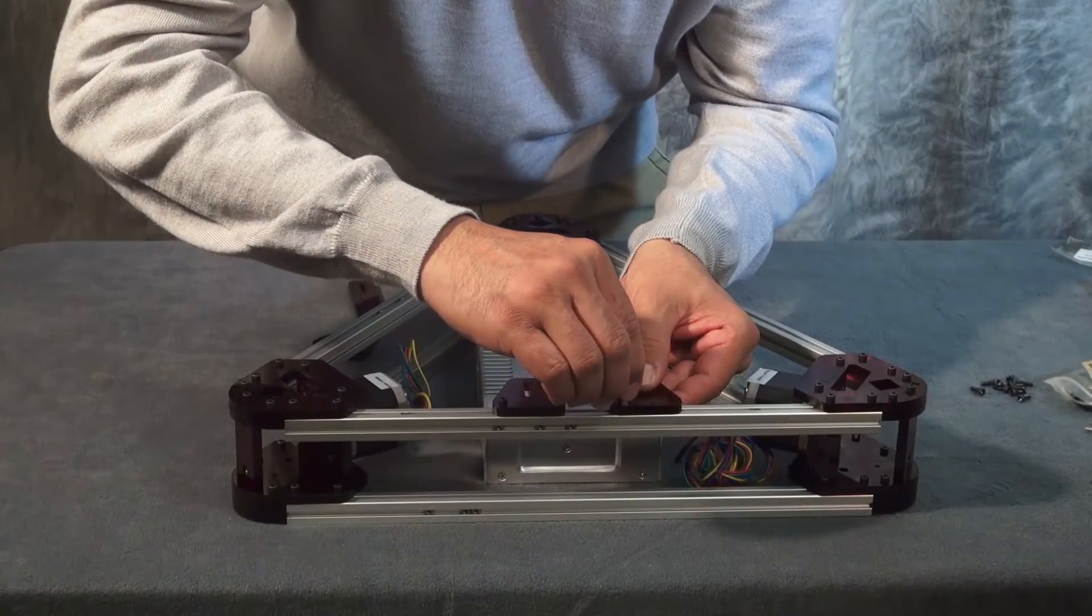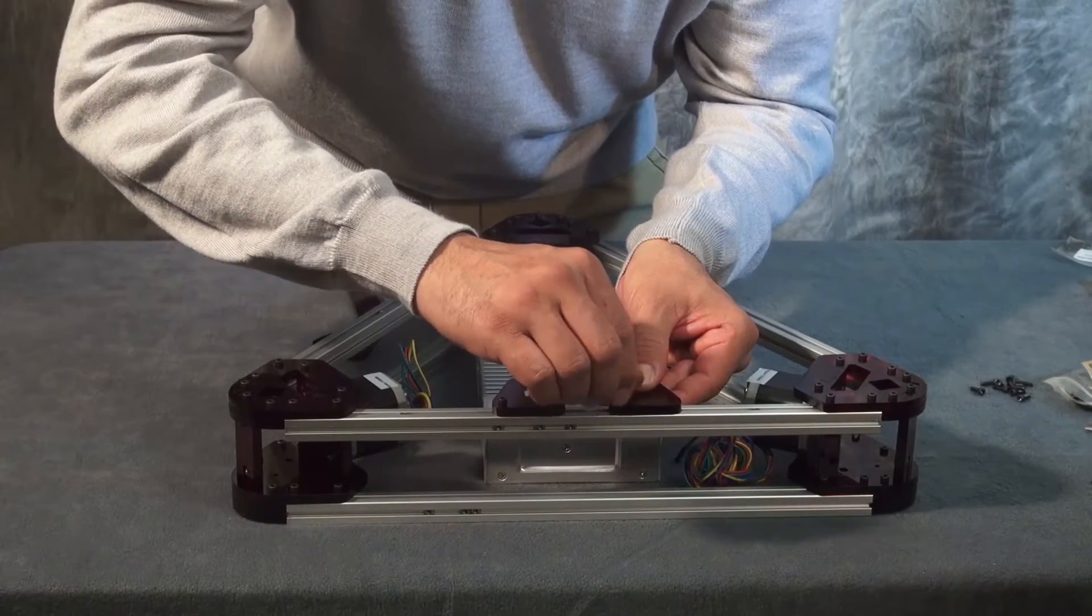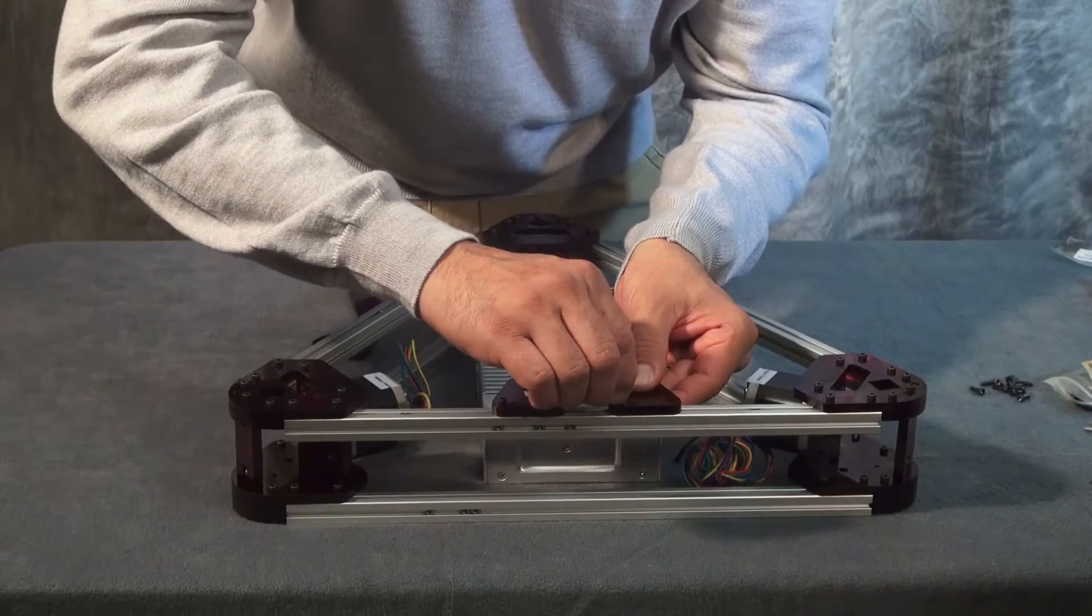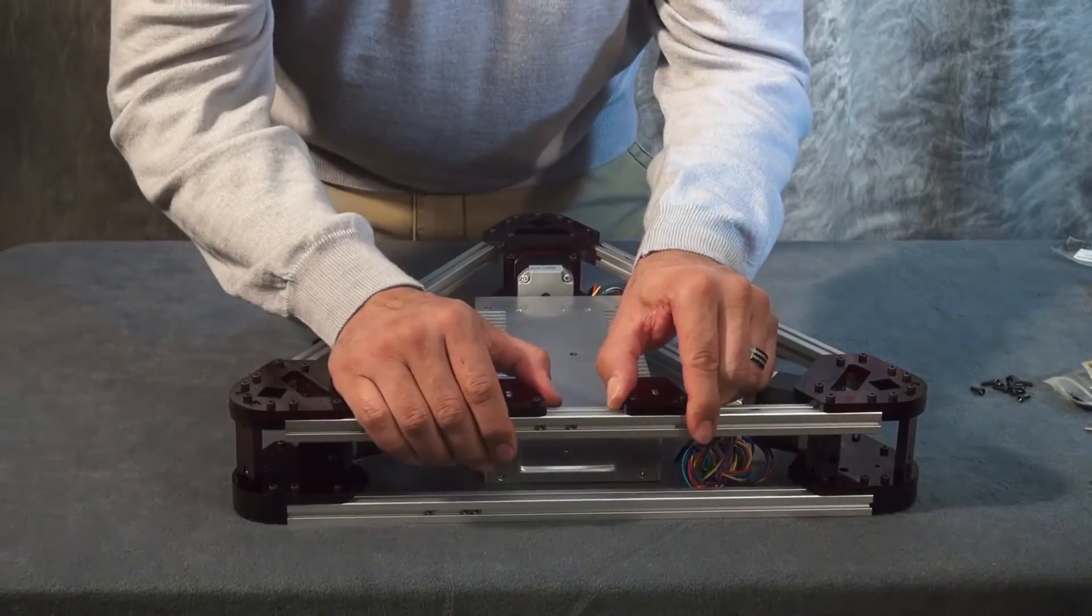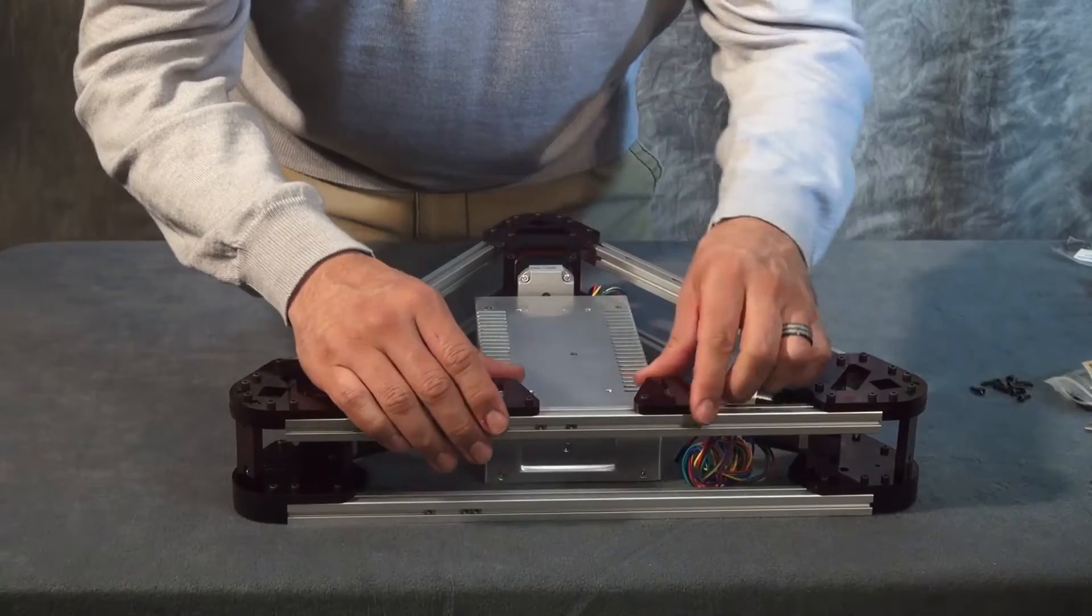Make sure you just hand tighten it so you can still slide the unit around. The acrylic needs to be able to move around so you can adjust it to the width that you're going to need it when you put your power supply onto it.